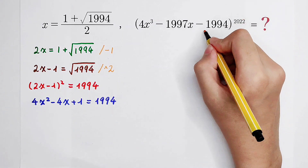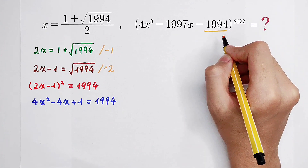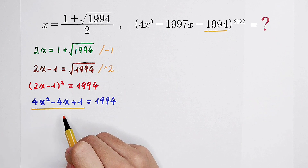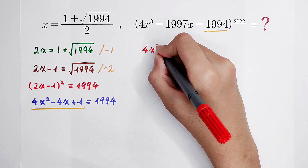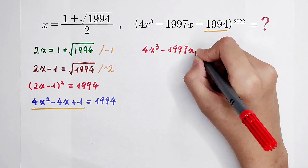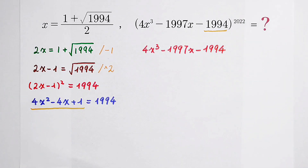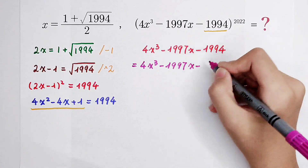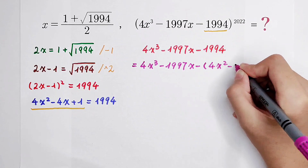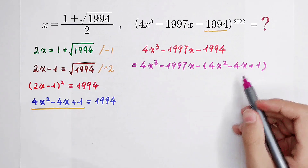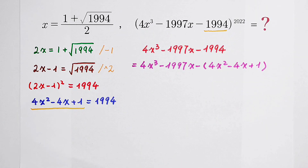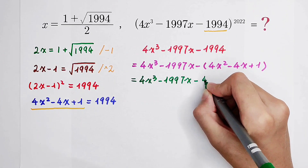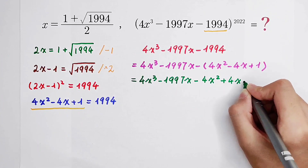Because here appears 1994, it can be written as 4 times x squared, then minus 4x, then plus 1. So the base becomes: 4 times x cubed, then minus 1997 times x, then minus 1994. Expanding the bracket: it is 4 times x cubed, then minus 1997x, then minus 4 times x squared, then plus 4x, then minus 1.